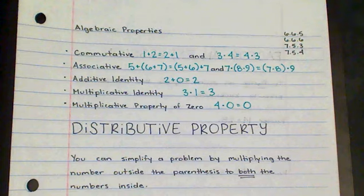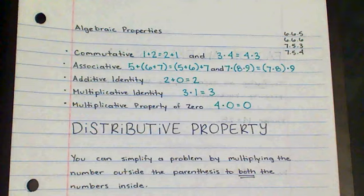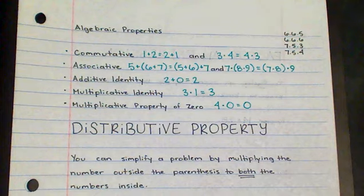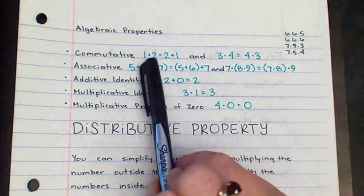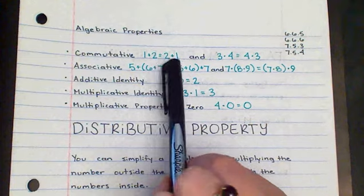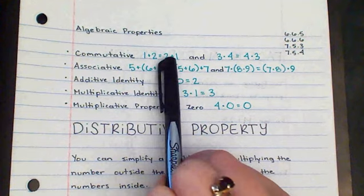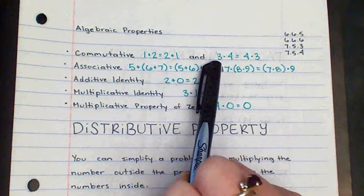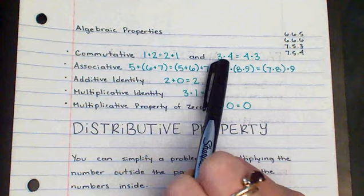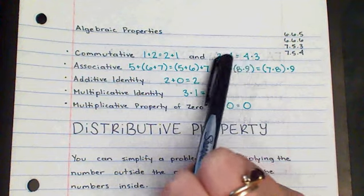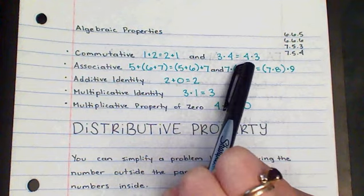The first property is the commutative property, and that property says that you can add or multiply numbers in any order — the order in which you combine them does not matter. So here, 1 plus 2 equals 2 plus 1; either way the answer is 3. My other example is 3 times 4 equals 4 times 3; no matter how I multiply it, that answer is 12.